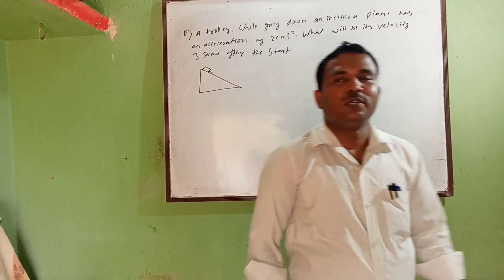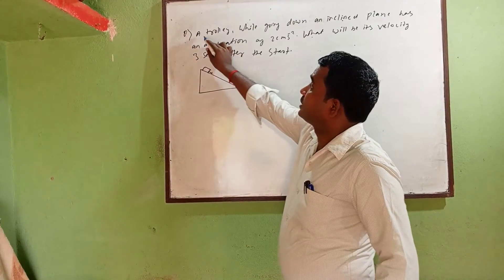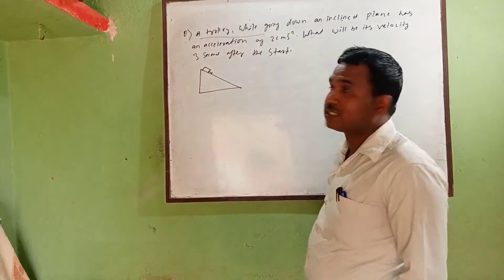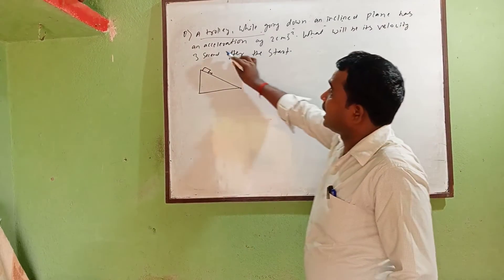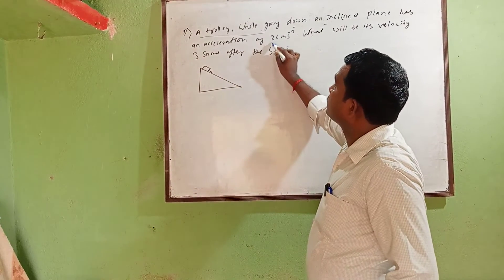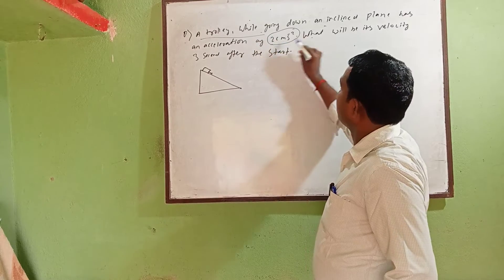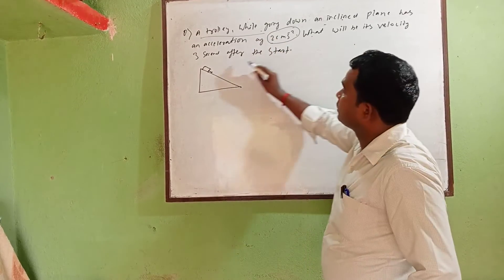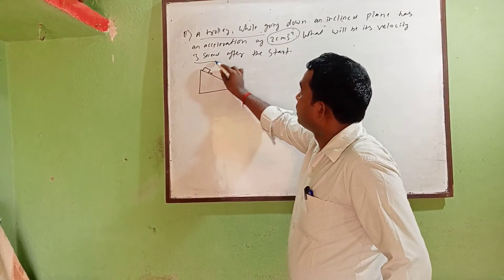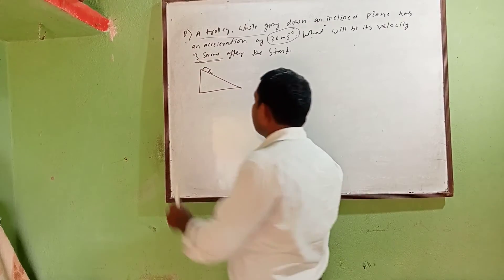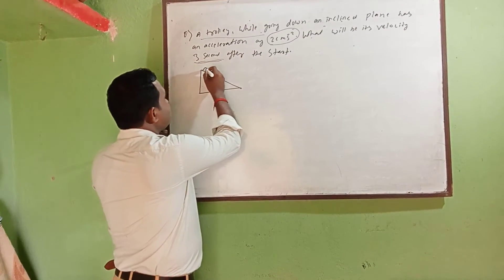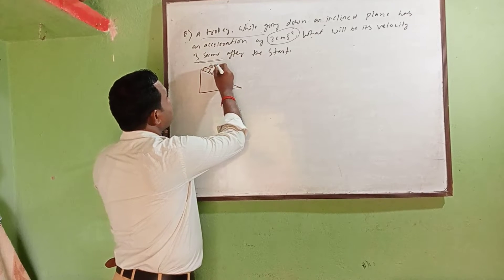We have a question: a trolley going down an inclined plane has an acceleration of 2 centimeter per second squared. What will be its velocity three seconds after it starts? Suppose that there is the inclined plane, this is the trolley.